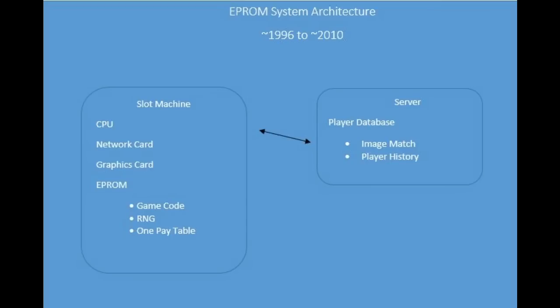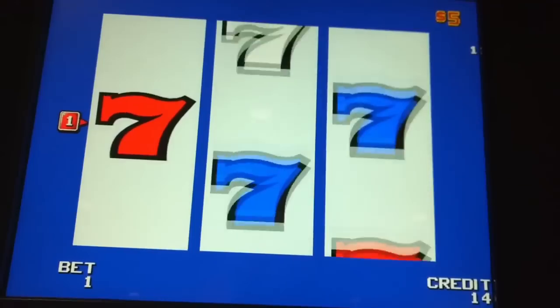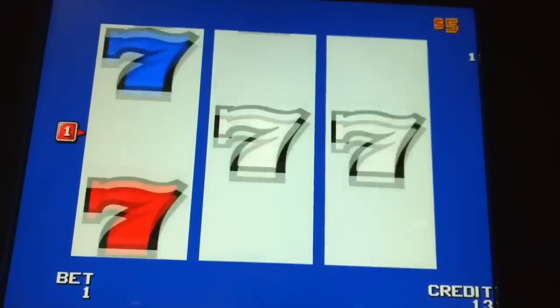If you're a casino getting a slot machine, you would tell the manufacturer, 'Hey, I want something at 92% payback,' and that was it. If you wanted to change your payback percentages, you would have to take that machine, open it up, take the EEPROM out, and put a different EEPROM in.